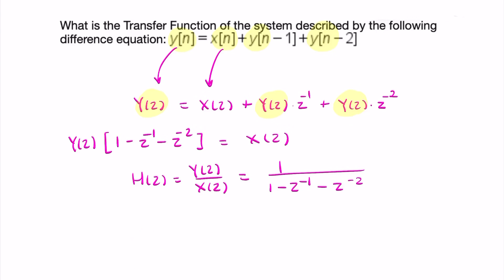And I can leave it at that. Or if I wanted to get rid of the negative z powers, I could multiply it by z squared over z squared. And that would give me z squared over z squared minus z minus 1. And that's my final answer. That's the transfer function from a difference equation.